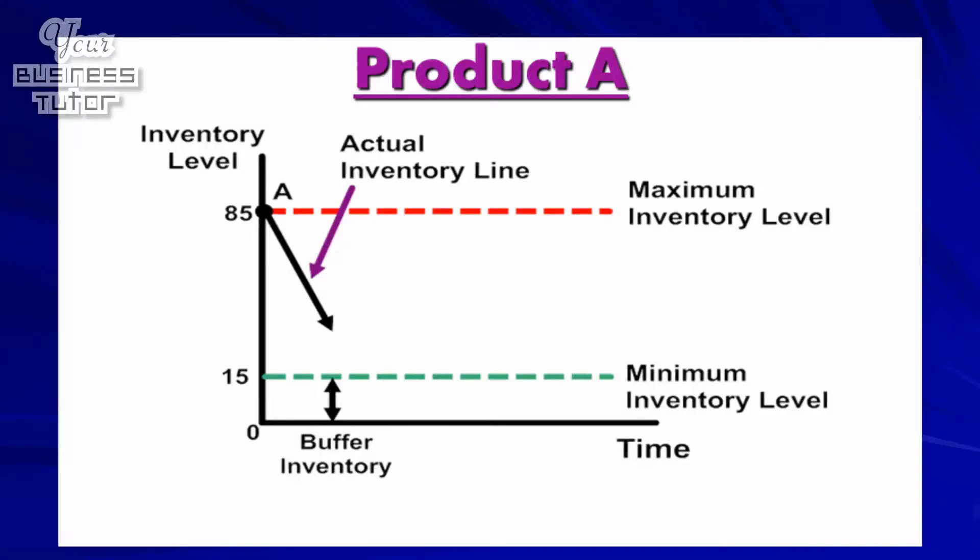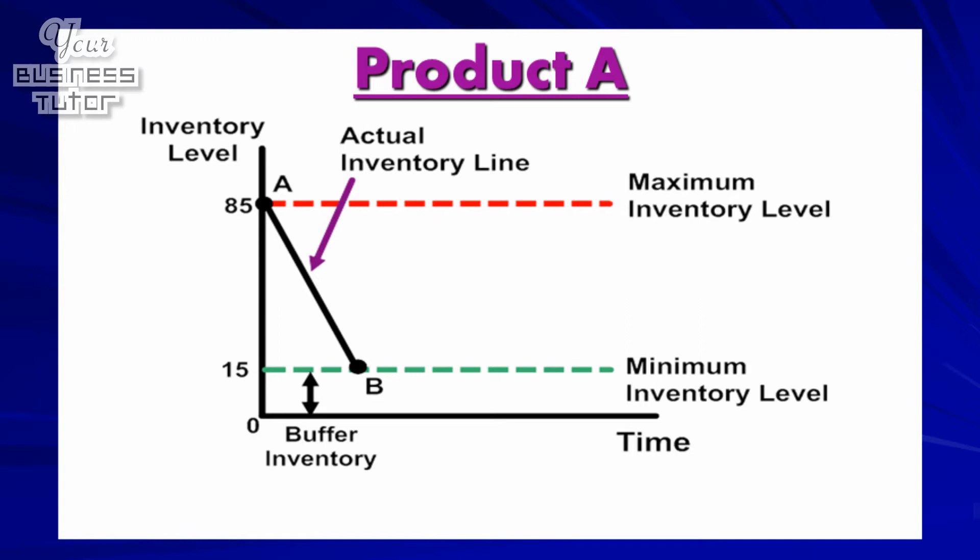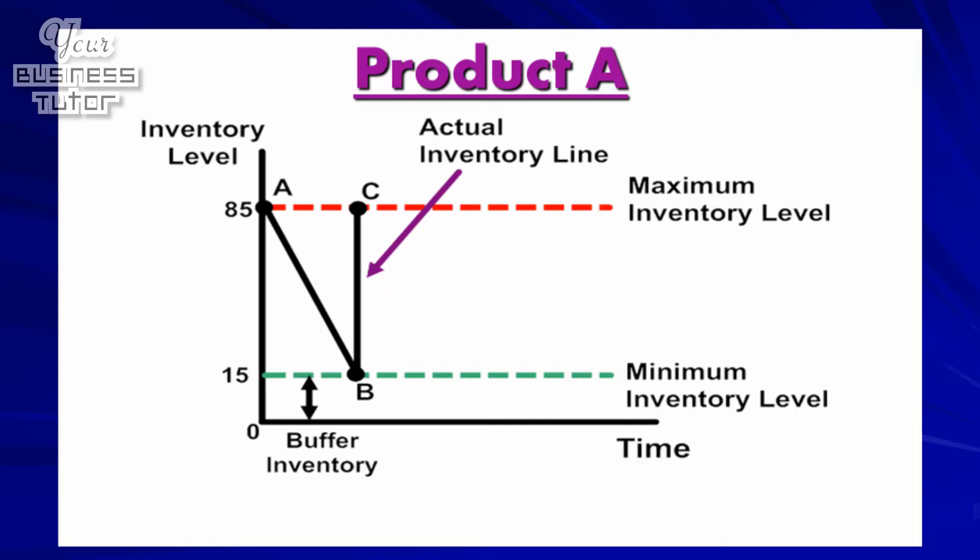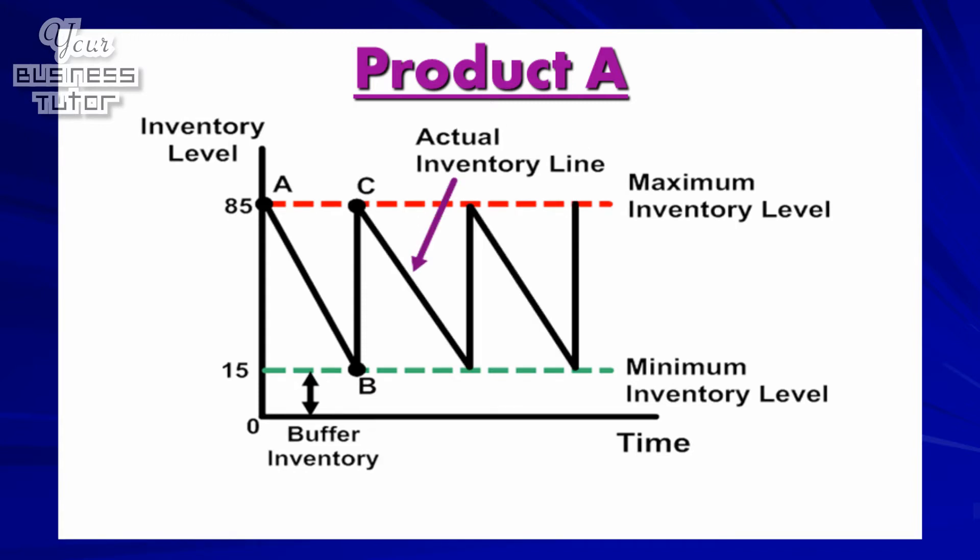For example, as the black line on the diagram shows, the business's actual inventory level line initially falls as stock is sold from point A on the maximum inventory line, until it eventually reaches point B on the minimum inventory line. From here, and so the business can keep trading, new stock is delivered, which pushes the inventory level back up to point C on the maximum line, before the cycle begins all over again, as can be seen.